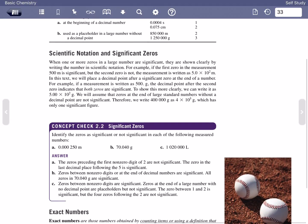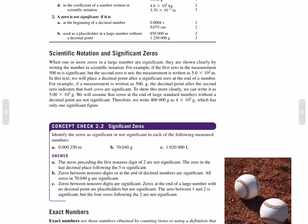Scientific notation and significant zeros. When one or more zeros in a large number are significant, they are clearly shown by writing the number in scientific notation. For example, if the first zero in the measurement 500 meters is significant, but the second zero is not, the measurement is written as 5.0 times 10 to the 2 meters. In this text, we will place a decimal point after a significant zero at the end of the number.